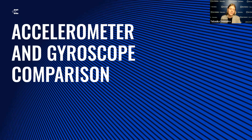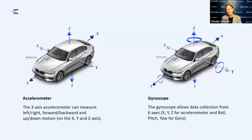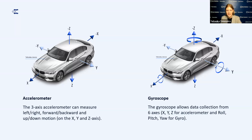Let's take a closer look at the differences between an accelerometer and a gyroscope. The accelerometer measures vehicle motion along three dimensions on the X, Y, and Z axis, capturing movement to the left and right, forward and backward, and up and down. This allows it to track changes in speed and direction effectively, while the gyroscope collects data across six axes.